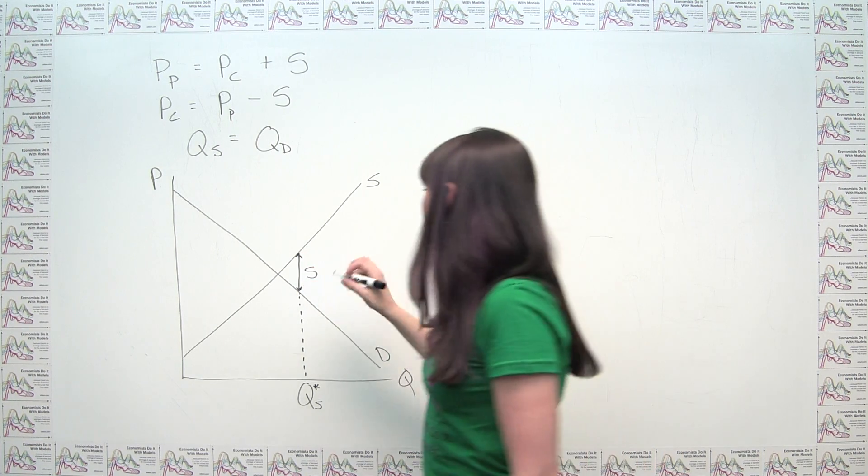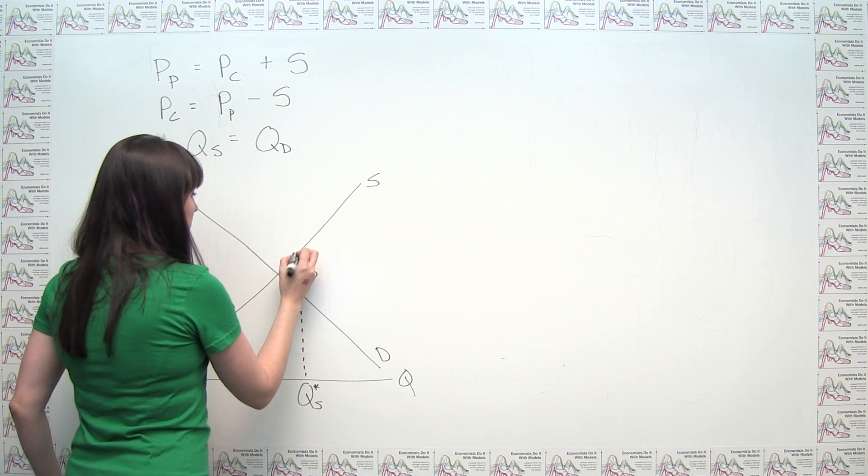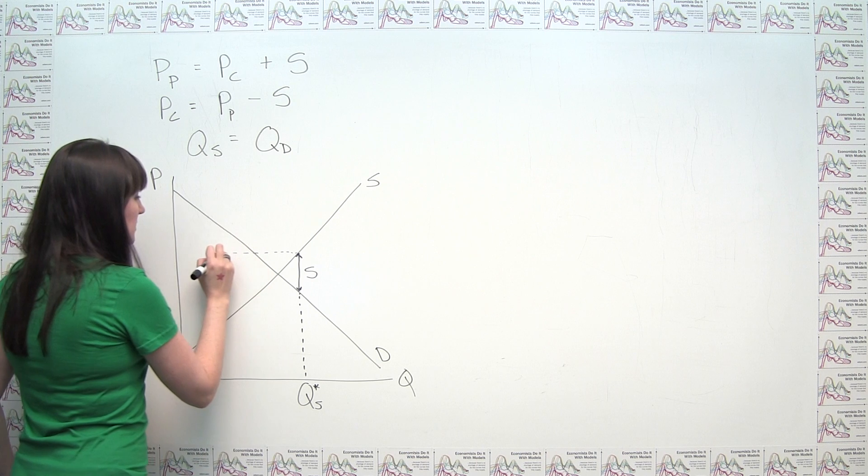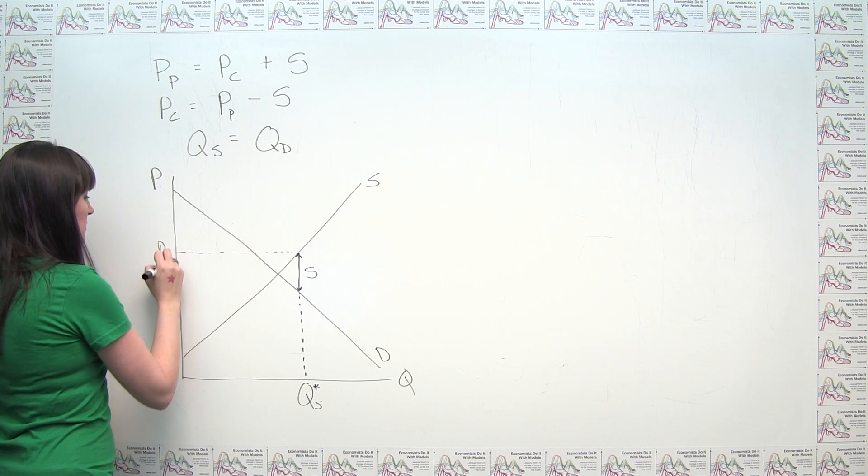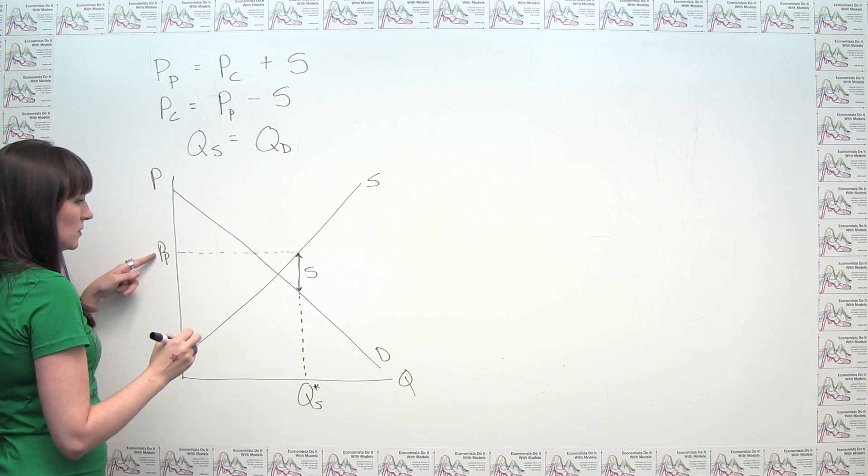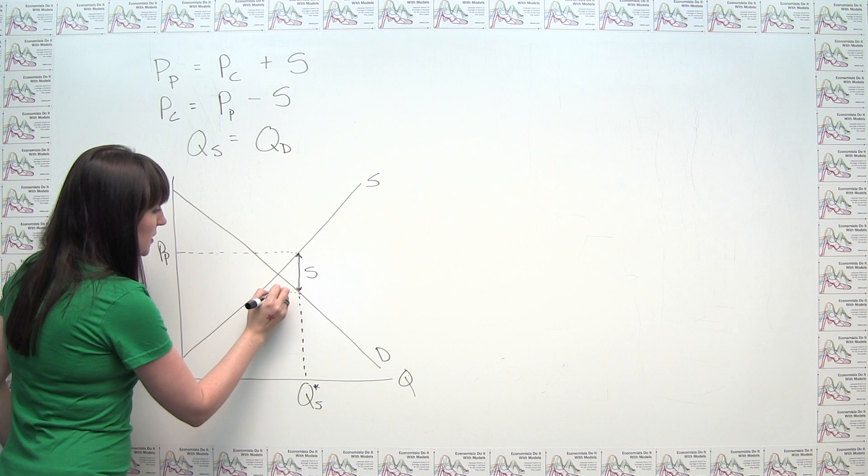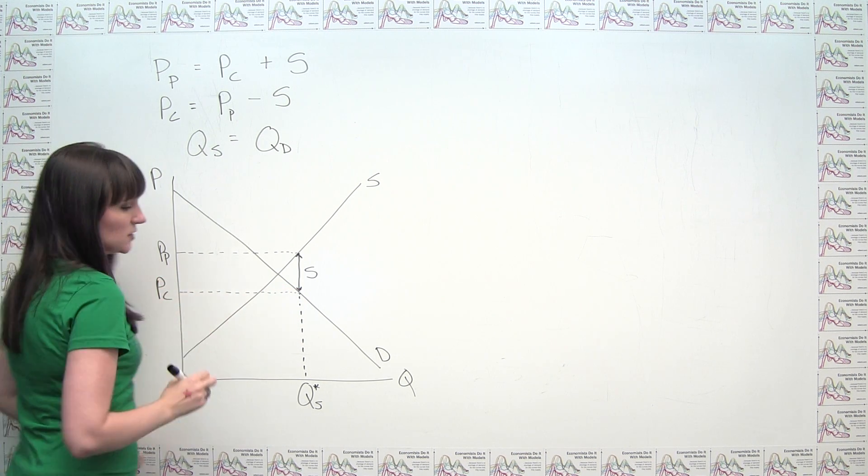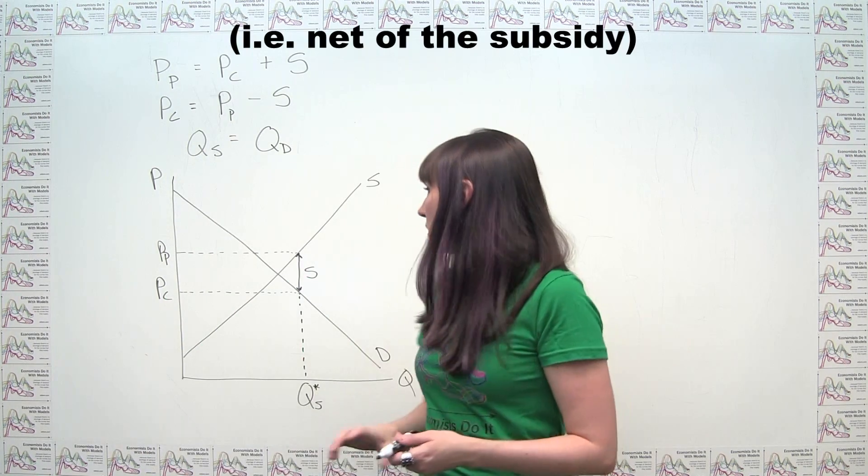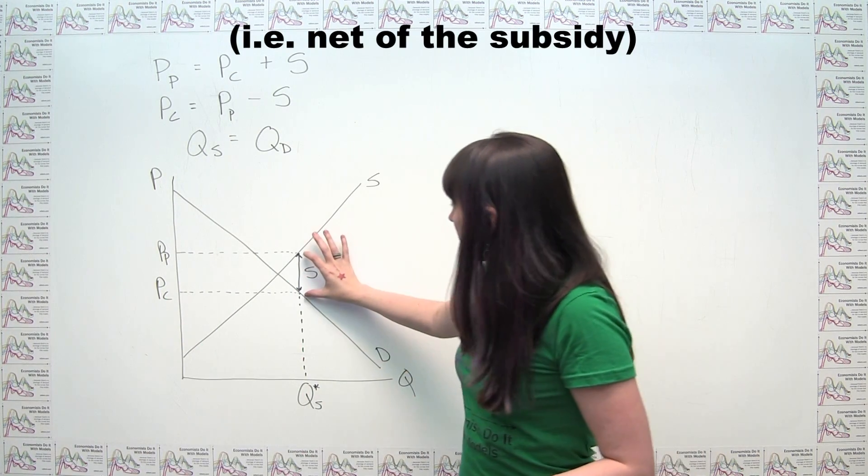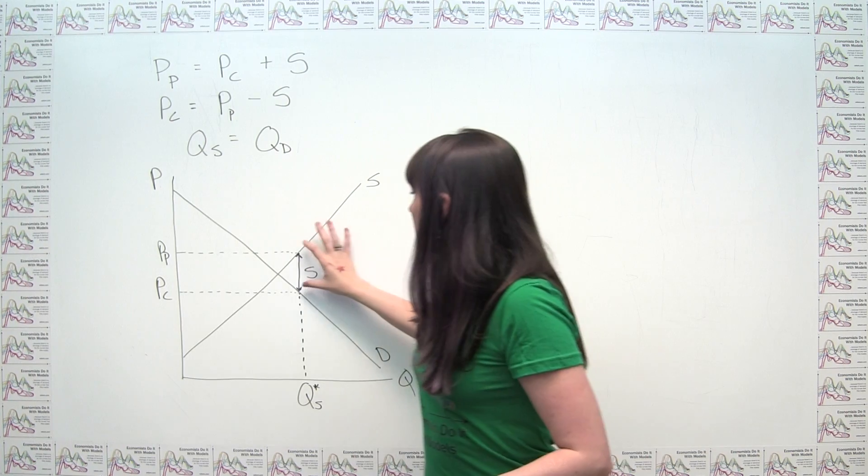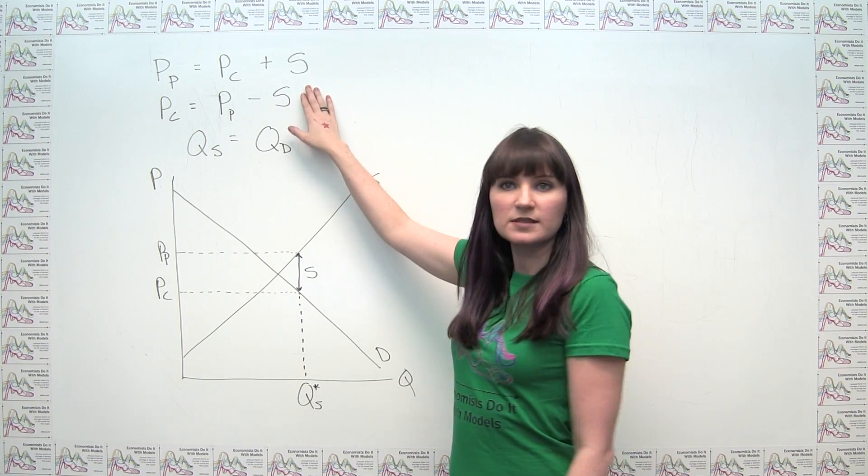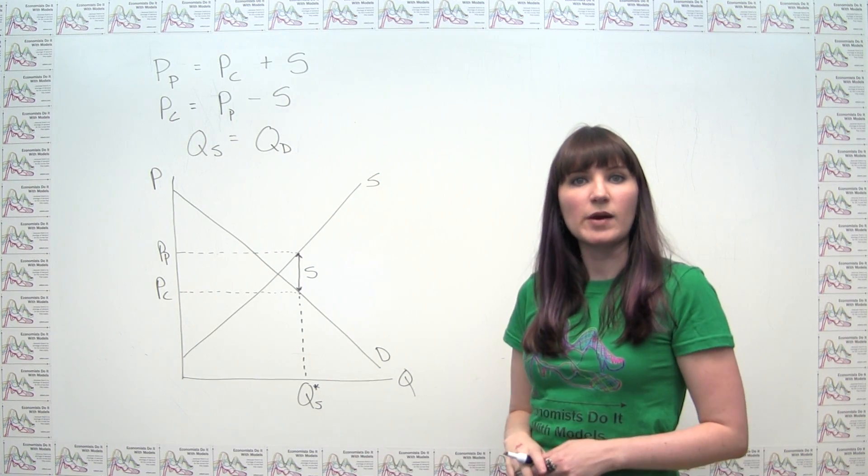And then we could just locate our prices as well by just looking at the corresponding prices on our supply curve and our demand curve. So, of course, our supply curve here is going to give the price that the producer gets to keep, and the demand curve here at this quantity is going to give the price that the consumer pays out of pocket. And not surprisingly, we can see that those two prices, as we stated, differ by exactly the amount of the subsidy.